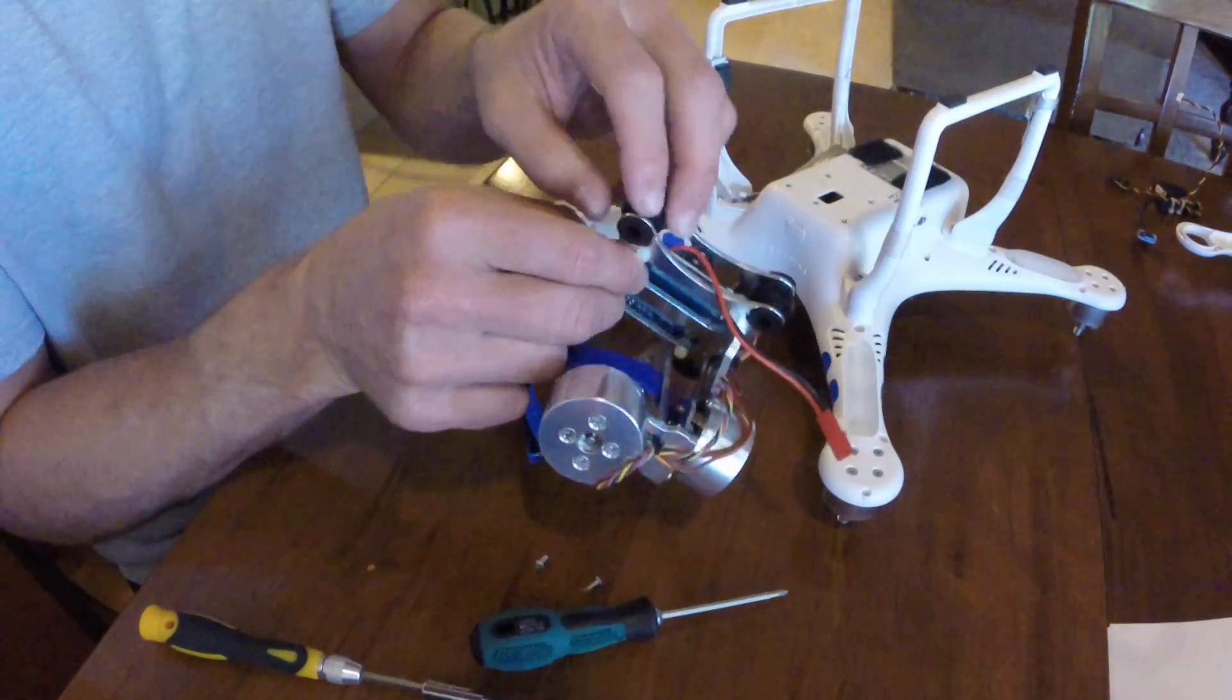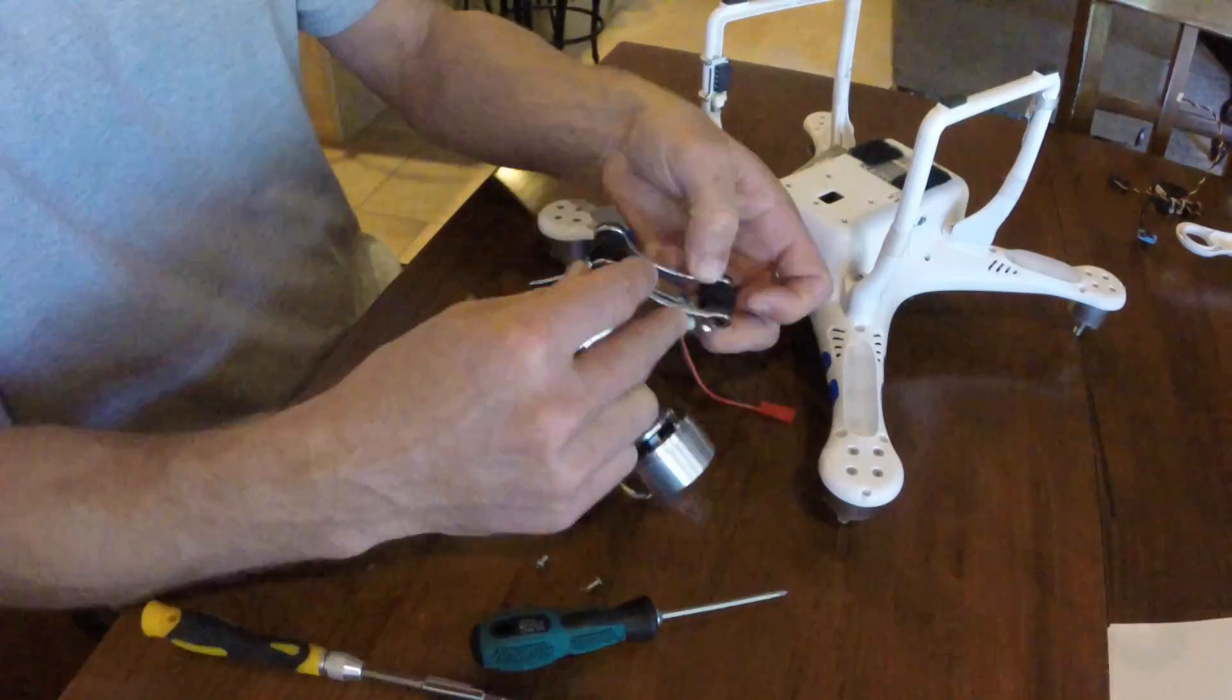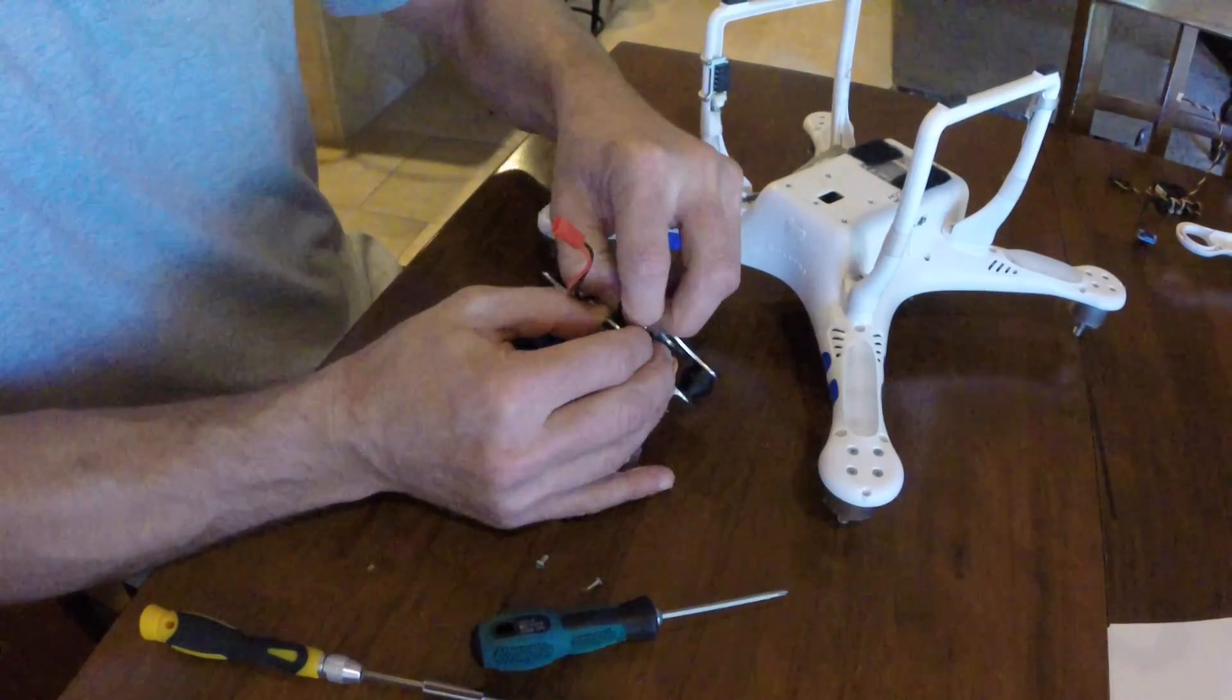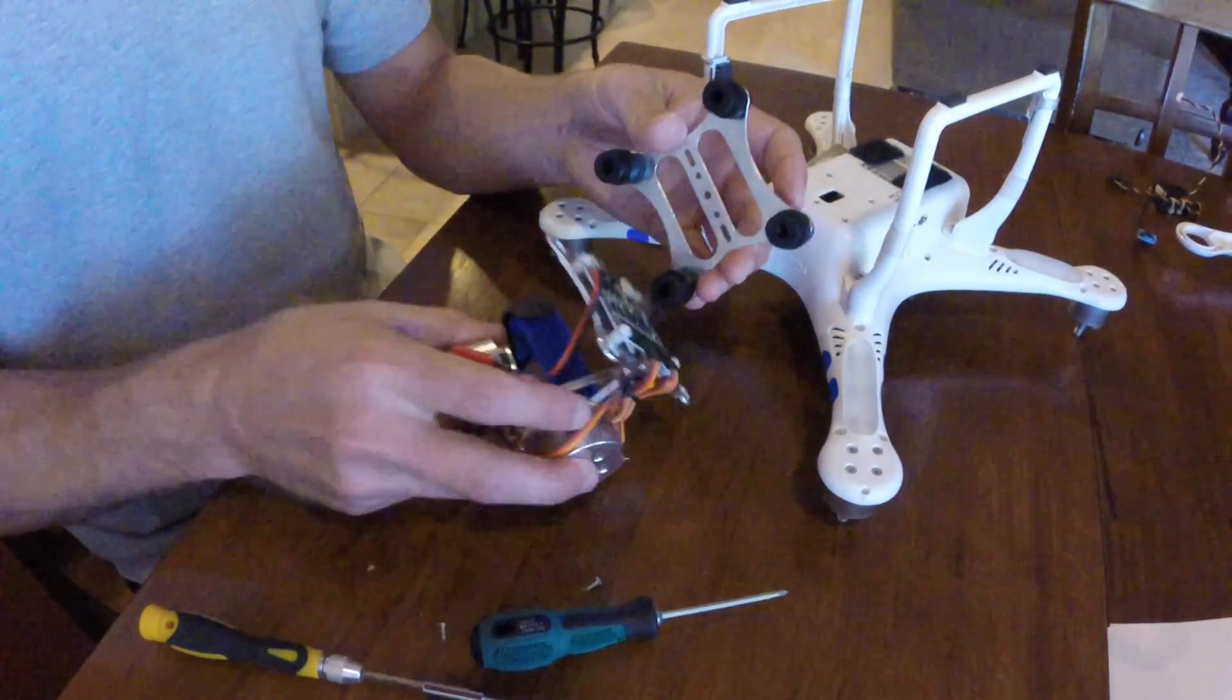Once you have the top taken off, flip the drone back over and grab the gimbal. If the rubber bumpers aren't already installed, leave them off.